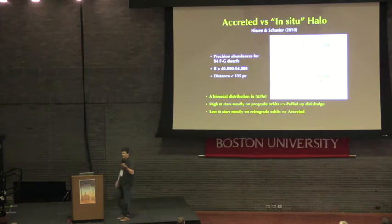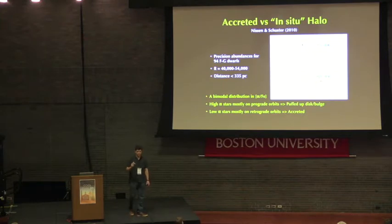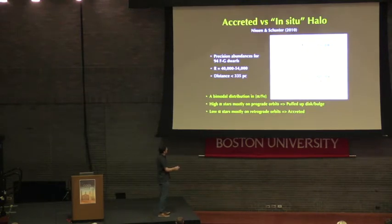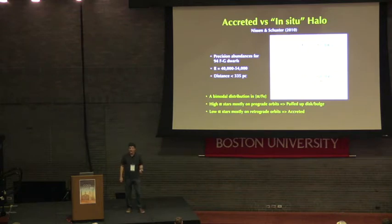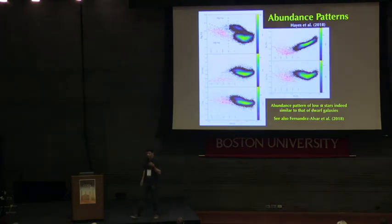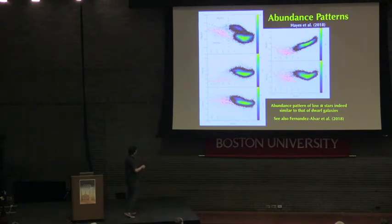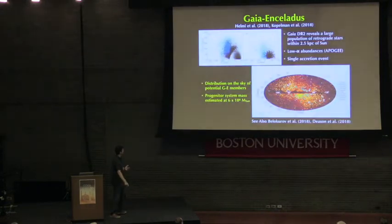The galactic halo has been known for quite a long time to be composed of two types of alpha populations — a high one and a low one. The low alpha population was identified by Nissen and Schuster based on 94 stars — insightful work. The low alpha population has retrograde motion whereas the high alpha is prograde. Their interpretation is that the low alpha population is accreted. APOGEE studies this in detail with thousands of halo stars. Chris Hayes and collaborators showed that these low-alpha stars have an abundance pattern low in magnesium, aluminum, potassium, and nickel — the same as that of satellites of the Milky Way.